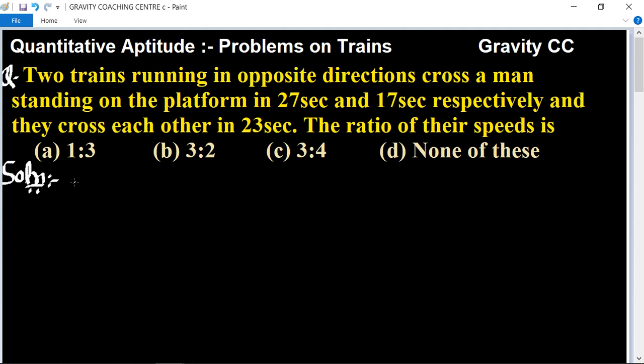Question: Two trains running in opposite directions cross a man standing on the platform in 27 and 17 seconds respectively, and they cross each other in 23 seconds. So the ratio of their speeds is what?